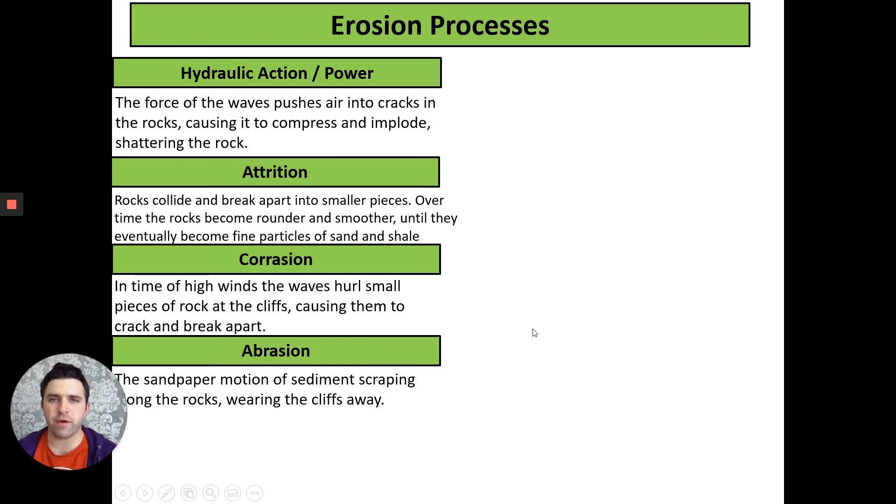Abrasion works very closely alongside corrasion because as these rocks are thrown at the cliff we get the sandpaper movement of them scratching and scraping their way down the cliff, and that causes the cliff to wear away. I'm not going to do a diagram for abrasion because I can't really draw sandpaper. But imagine if in DT you use sandpaper or doing some DIY around the house, the scraping, the scratching, or like a cheese grater. That's the best way to picture abrasion, it's that scraping and gouging motion which causes the cliffs to break.